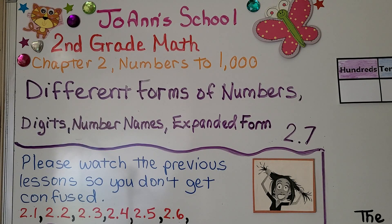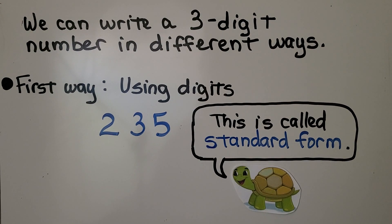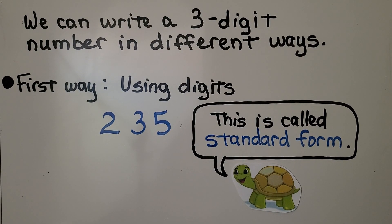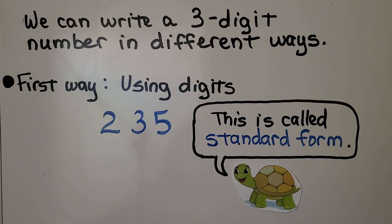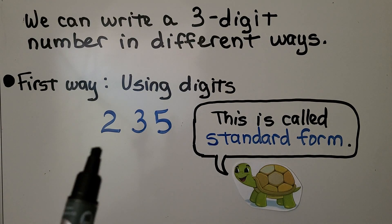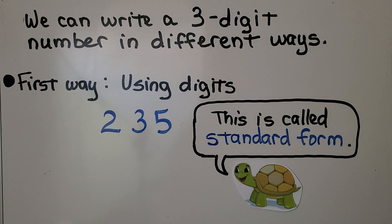Lesson 2.7: Different Forms of Numbers. We're going to talk about digits, number names, and expanded form. We can write a three-digit number in different ways. The first way is using digits — we have 235, and this is called standard form.